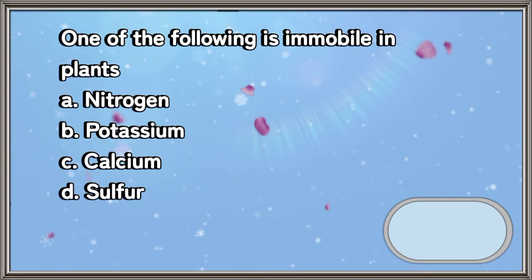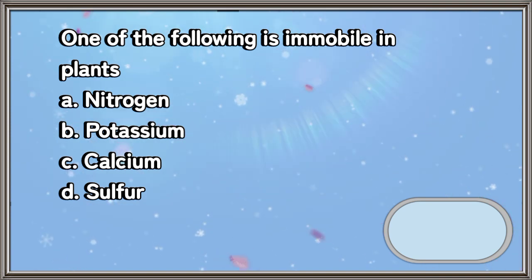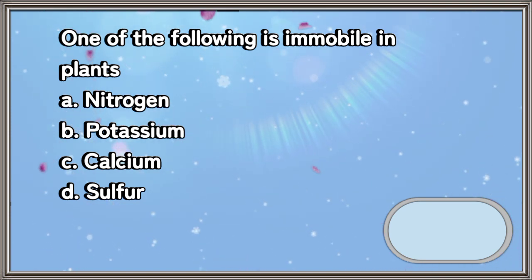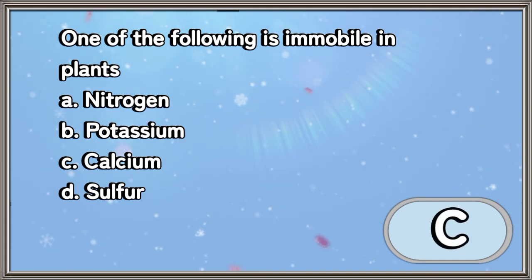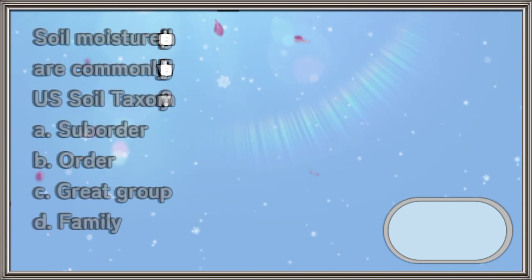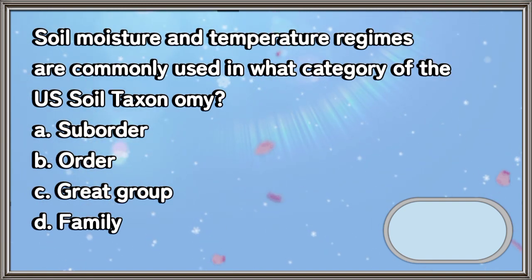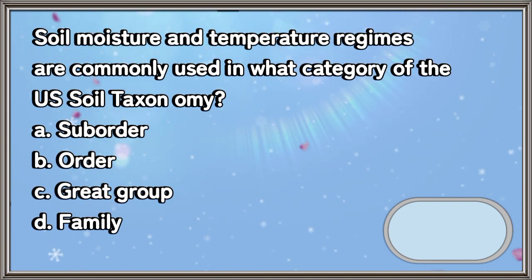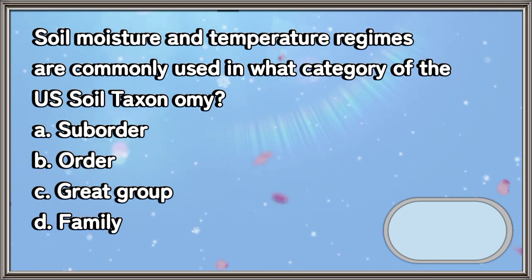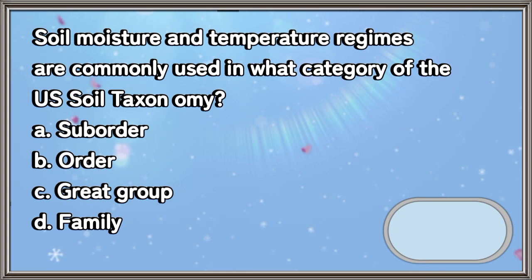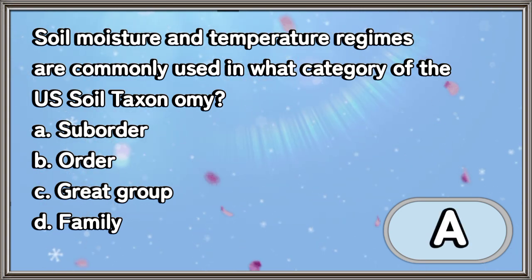Which one of the following is immobile in plants: a) nitrogen, b) potassium, c) calcium, d) sulfur. The answer is letter C. Soil moisture and temperature regimes are commonly used in what category of the U.S. Soil Taxonomy: a) suborder, b) order, c) great group, d) family. The answer is letter A.